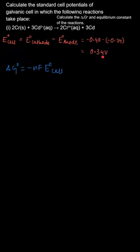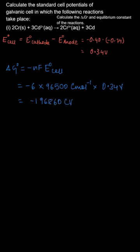Substituting these values, we get minus 6 into 96500 coulomb per mole into 0.34 volt. Multiplying all these, we get the answer as negative 196860 coulomb volt, that can also be written as joules, and converting it into kilojoules we get it as minus 196.860 kilojoule.